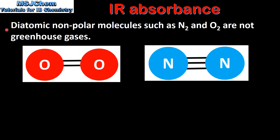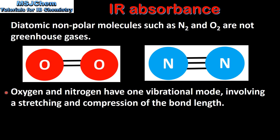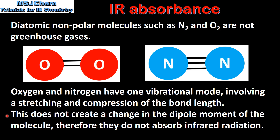Diatomic non-polar molecules such as nitrogen and oxygen are not greenhouse gases. Oxygen and nitrogen only have one vibrational mode involving a stretching and compression of the bond length. This does not create a change in the dipole moment of the molecule, therefore they do not absorb infrared radiation.